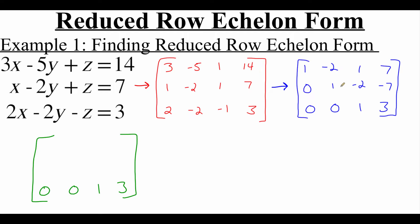We are going to have to do a little bit of work with the middle row — that zero, one, negative two, negative seven row. What we need to do is turn that negative two in the third entry into a zero, but we have to be careful not to change the first two entries, because we need those to stay as a zero and a one. So I'm going to take the bottom row and multiply it by two, because that gives me a two in the third column, which I can add to this negative two to zero that out.